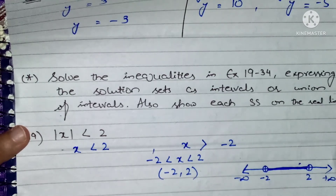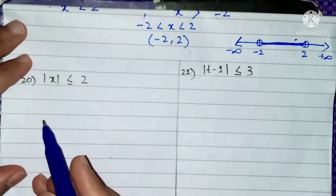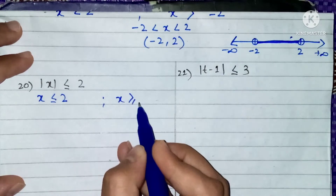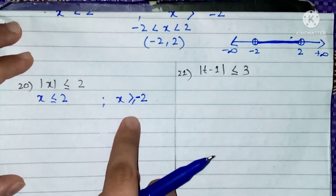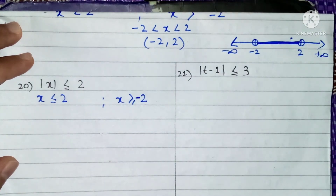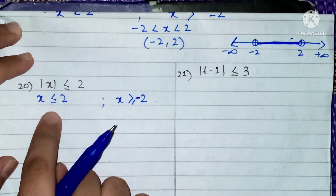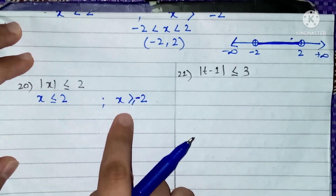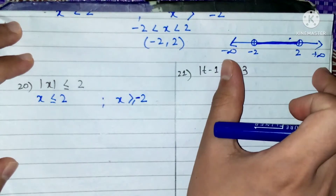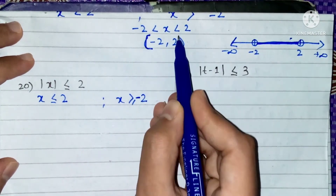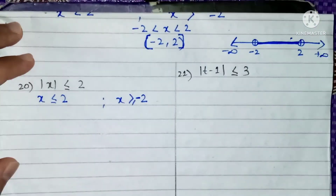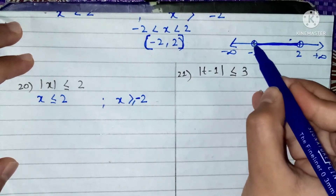Now we move to question number 20. We open the mod and write both the positive and negative sides. When we write the negative side, the inequality sign switches. We solve to get x less than equal to 2 and x greater than equal to minus 2. This is the same form as question 19, but now 2 and minus 2 are included, so we have a closed interval [minus 2, 2].